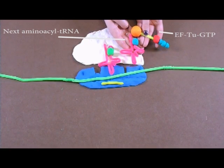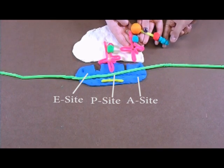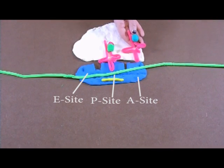As the incoming aminoacyl tRNA is brought into the A-site, the EF2 GTP complex is hydrolyzed and releases a phosphate.